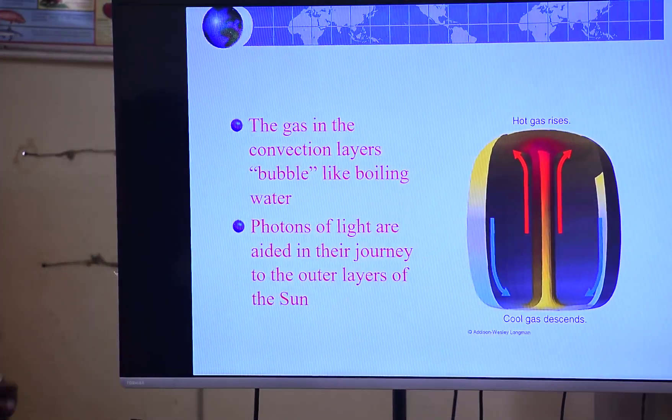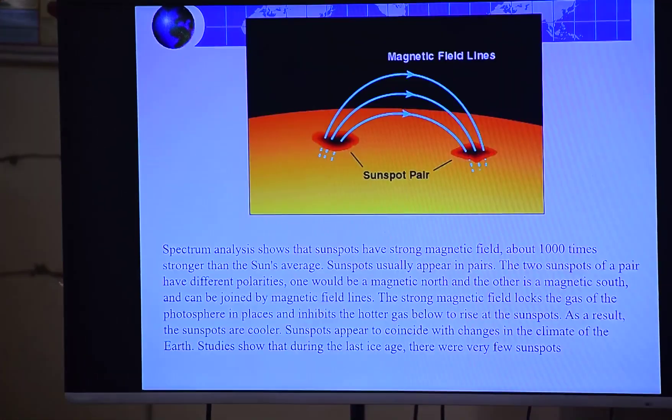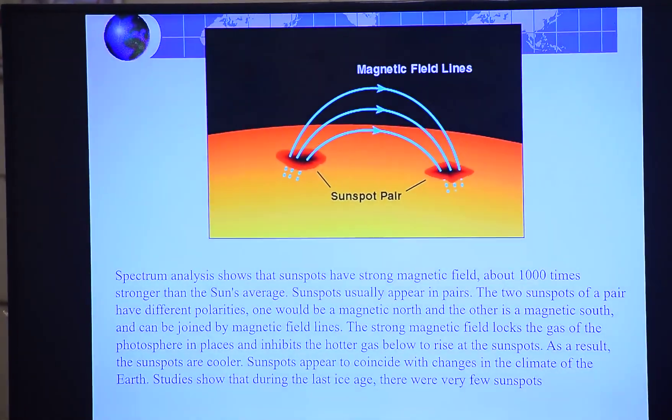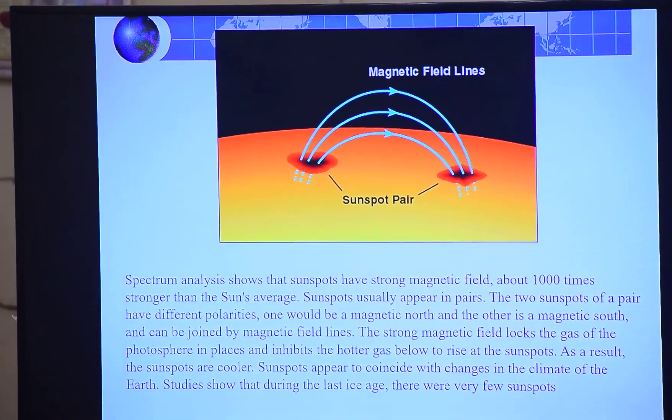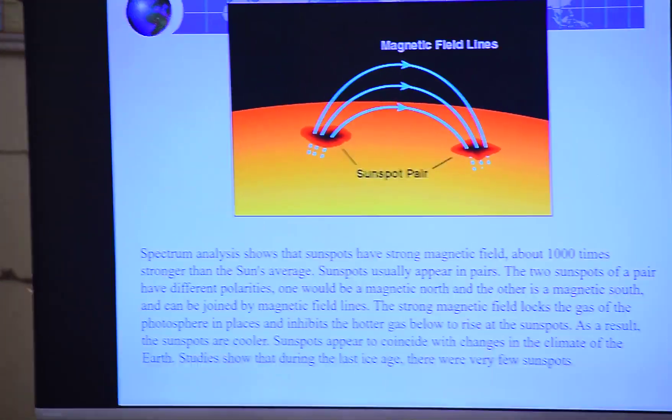So the black spot - sunspot is always forming in pairs. Sunspot always forming in pairs.